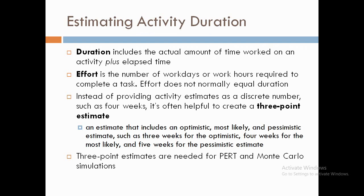After this comes estimating duration and effort — the number of working days required to complete a task. Instead of providing a specific discrete number, three-point estimates are used: the optimistic estimate, which assumes the project will be completed without any problems in the fastest time possible; the pessimistic estimate, which assumes everything that could go wrong will go wrong and the project will take the maximum time; and the most likely estimate, which is intermediate between the optimistic and pessimistic estimates.